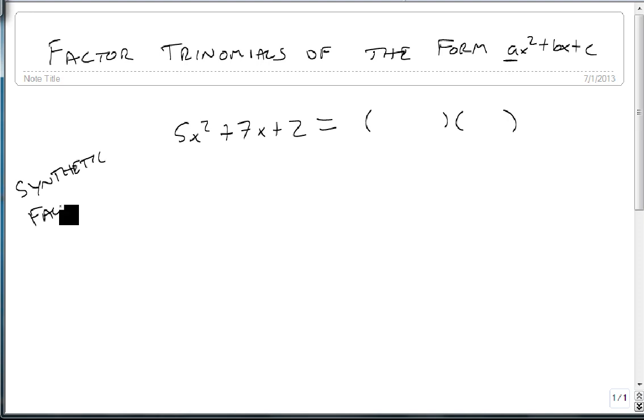This is a lot different than other methods you may have seen, but if you get the hang of it, it's real easy. We start by taking the first number and multiplying it by the last number. 5 times 2 equals 10.